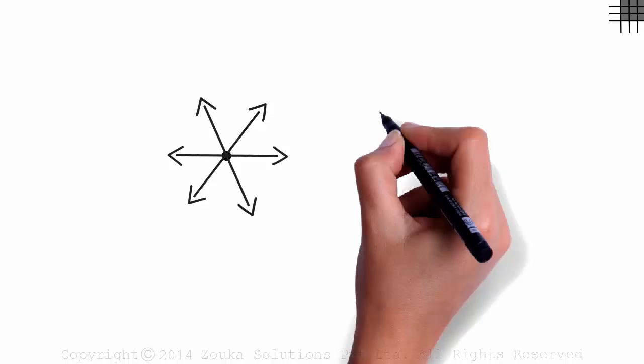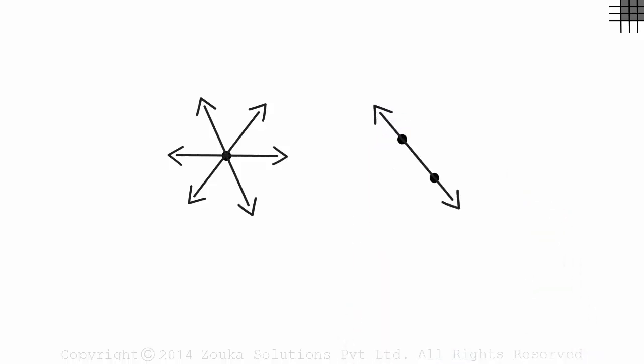What about two points? How many lines can be drawn passing through both these points? Just one. One and only one line can be drawn passing through two given points.